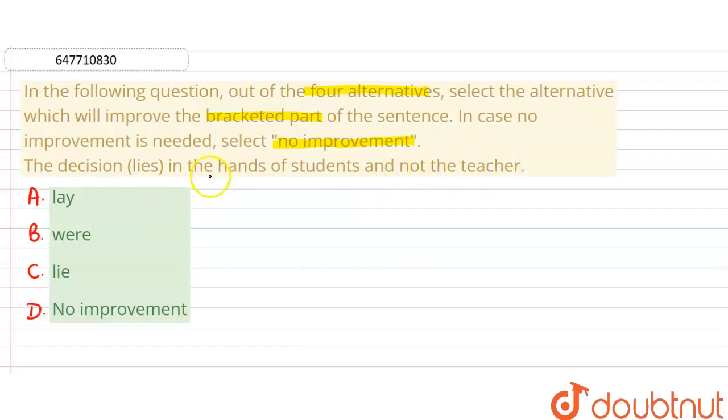The decision lies in the hands of the student and not the teacher. What is it saying? It says that the decision is in whose hands? In the hands of the students, and not the teachers. Not in the hands of the teachers, but in the hands of the children.